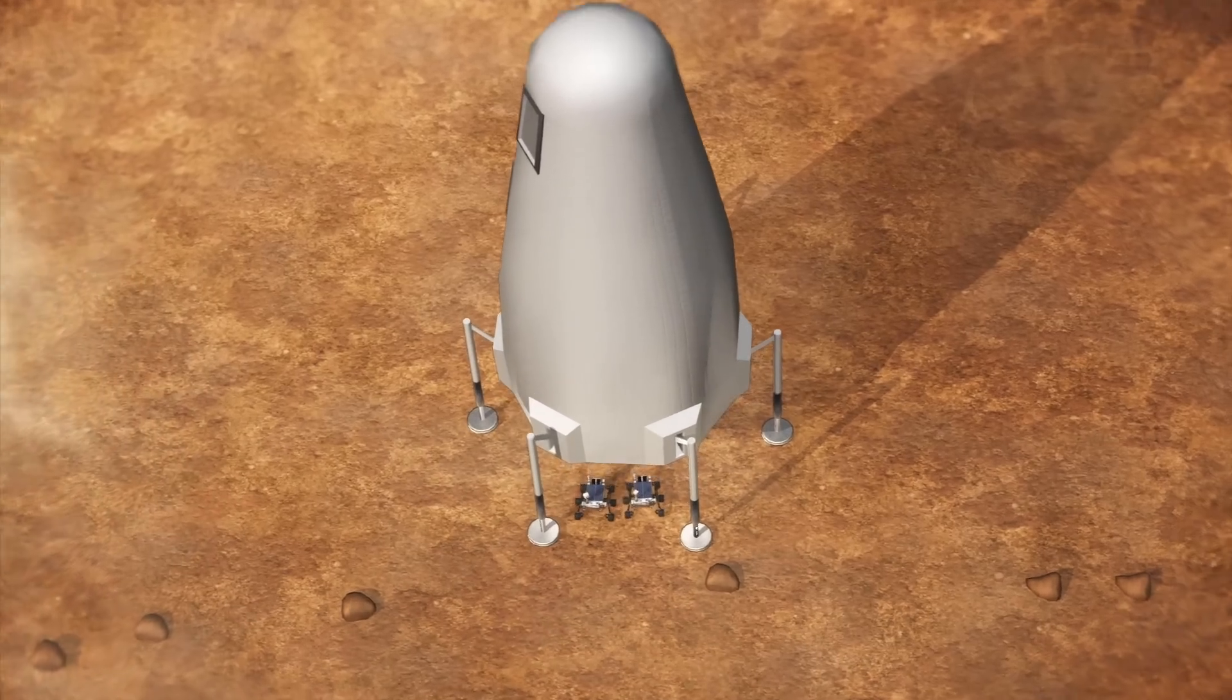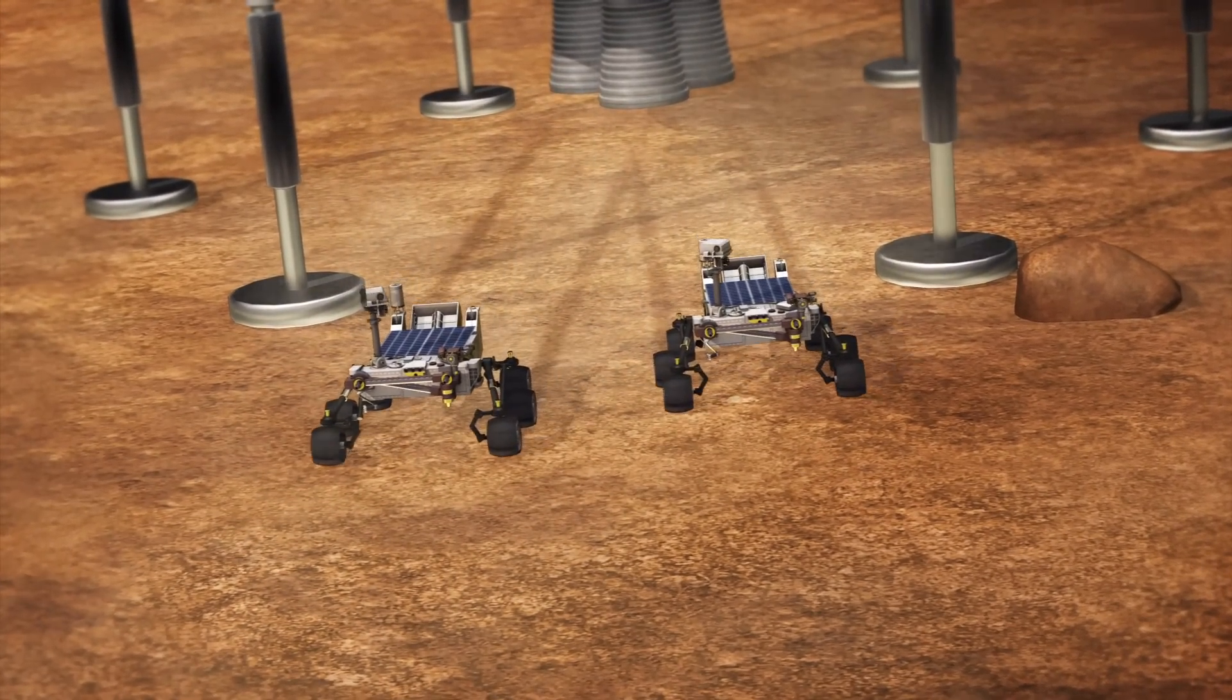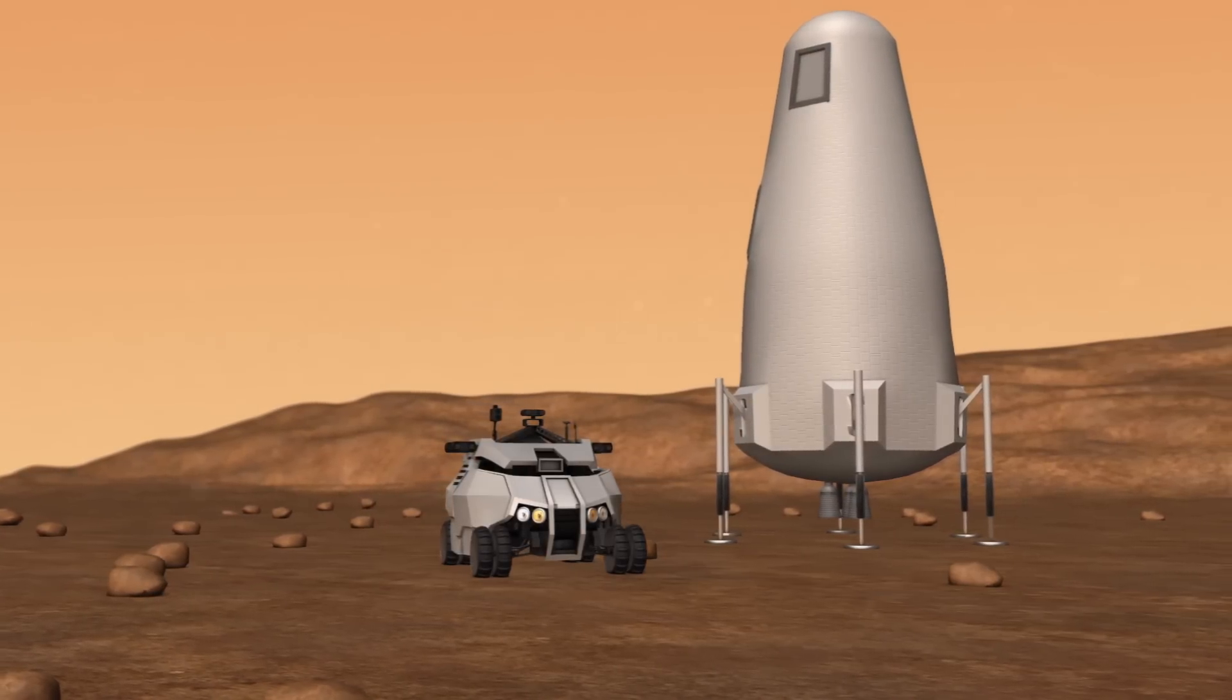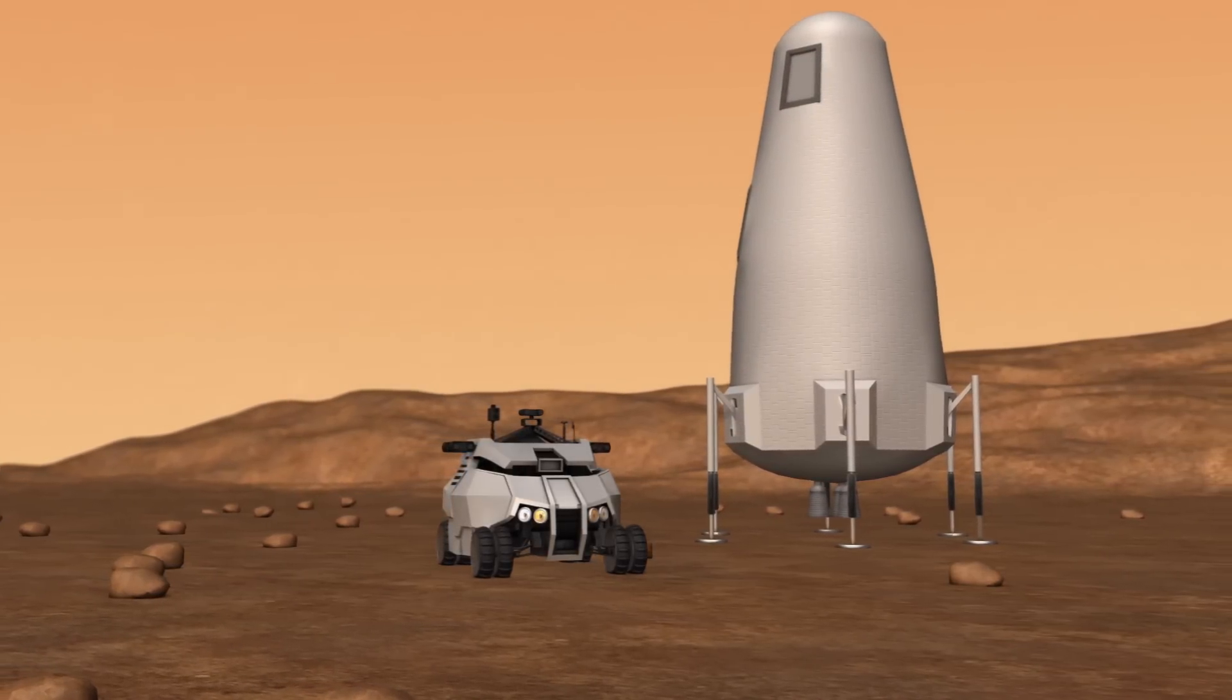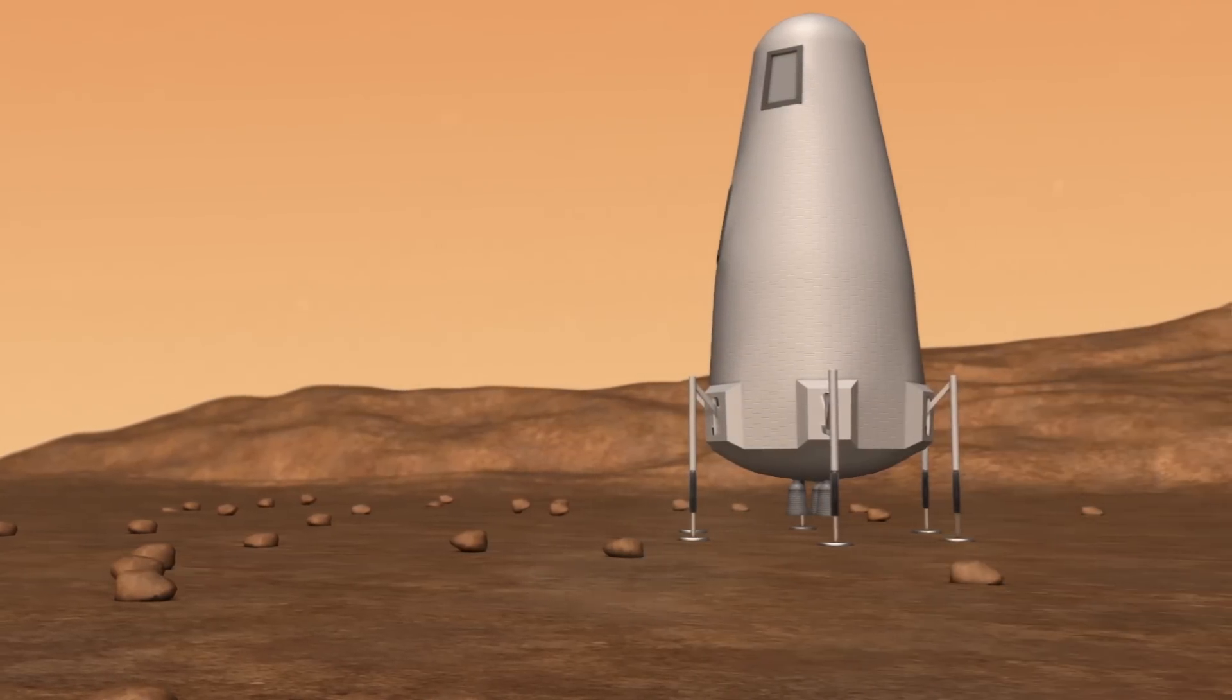The scientific rovers explore the area around the landing site. The remotely driven truck drives away from the ERV to deploy a nuclear reactor. The reactor will produce methane and oxygen, which will be used as fuel by astronauts and to power the ERV's return to Earth.